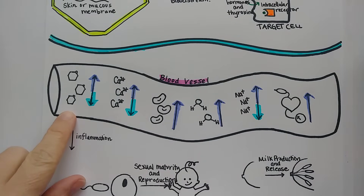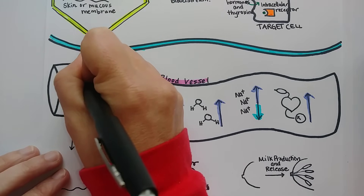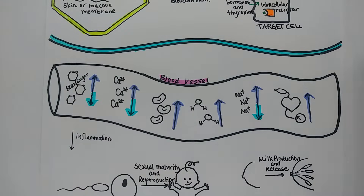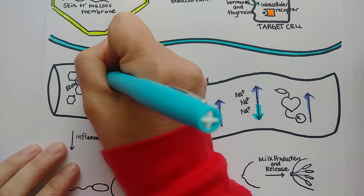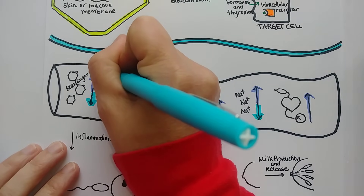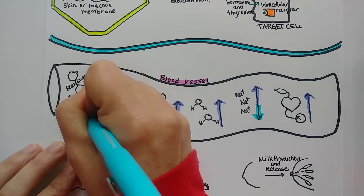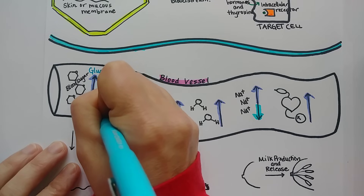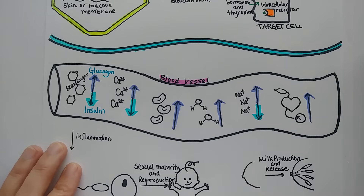This represents blood sugar. When we say blood sugar, we essentially always mean blood glucose. The hormone that makes blood sugar go up is called glucagon — it comes from the pancreas and causes the liver to raise blood sugar. The pancreas also makes insulin, which makes blood sugar go down. So glucagon makes blood sugar go up and insulin makes blood sugar go down.